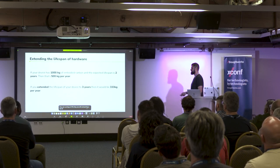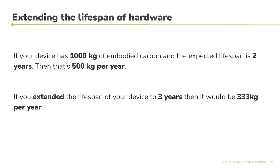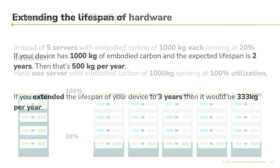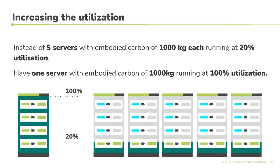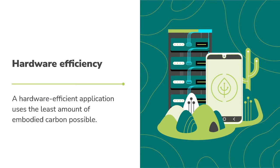Simple math: why use five servers, each emitting about a kilotonne of embodied carbon when built, running at 20% utilization? Use one server and run it at 100% utilization. There's a cost benefit obviously, but this is another argument for increasing server utilization. A hardware efficient application uses the least amount of embodied carbon possible — that is the hardware efficiency principle.